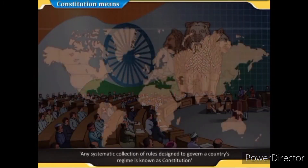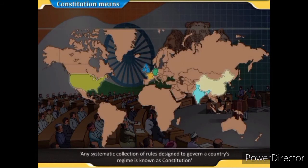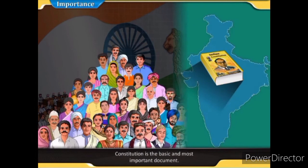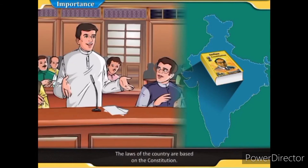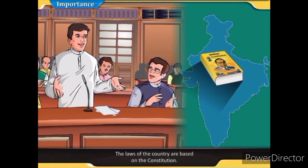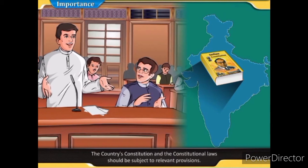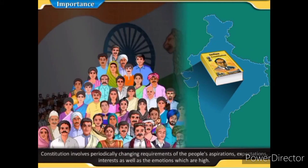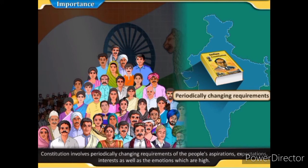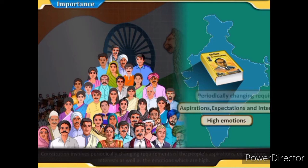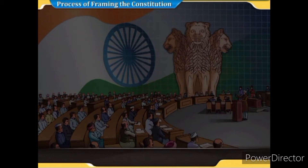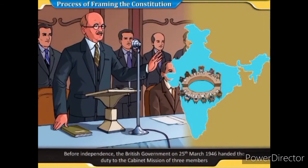A Constitution means any systematic collection of rules designed to govern a country's regime. It is the basic and most important document; the laws of the country are based on it. Constitutional laws should be subject to its relevant provisions, as the Constitution is superior to all laws. It involves periodically changing requirements reflecting people's aspirations, expectations, interests, and emotions, which is why it is known as a live and basic document.